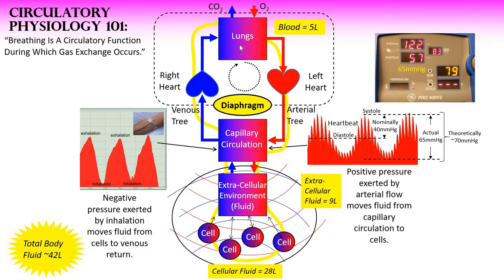A critical factor here is depth and rhythmicity of inhalation, because it is important that we empty the venous tree into the lungs on a regular basis. If we fail to do that, then the blood languishes in the venous tree and in the capillary circulation, and the arterial blood that the heart is pushing has nowhere to go — so our circle is not flowing freely; it is impeded by the blood backed up in the venous and capillary circulation.